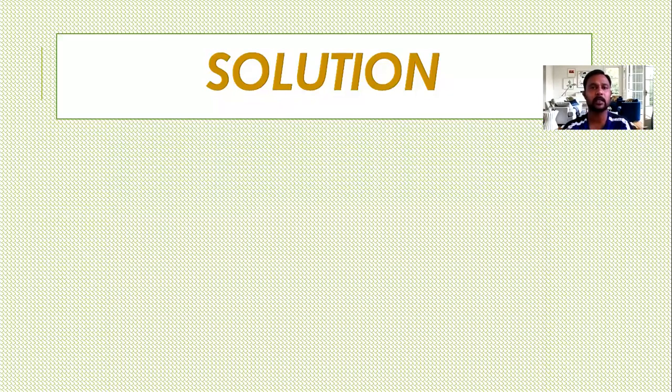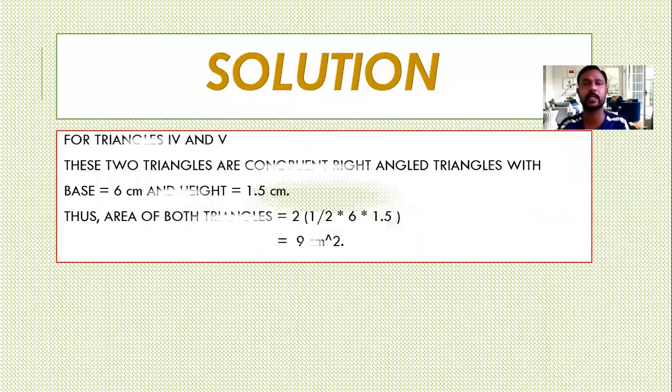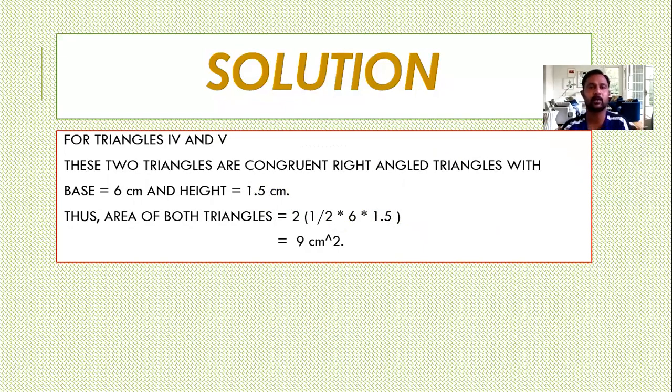Now, a single part remains, which is the fifth part, fourth and fifth. Fourth and fifth are same, very same. We say congruent triangles. These two triangles are congruent, not only congruent, they are right also. Right angle triangle.